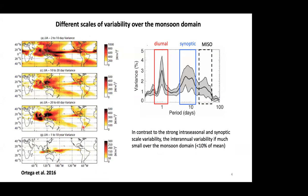These are the different scales of variability observed over the Asian monsoon domain. There is strong variance in the 2-to-10 day synoptic timescale, significant variance in the quasi-biweekly 10-to-20 day timescale, and a very strong signal in the 20-to-60 day timescale — what we call the MISO or ISO timescale. Relative to all this high-frequency variability, the interannual monsoon variability is less than 10% of the mean — much smaller compared to the intra-seasonal variability. That is the importance of S2S timescales for the monsoon region.